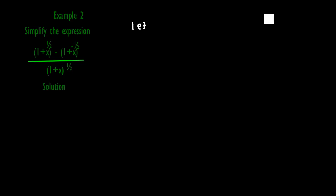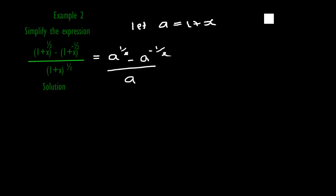To make it simpler, we let a equal 1 plus x. So 1 plus x appears as the first term in the numerator, the second term in the numerator, and also the term in the denominator. We will have a raised to power half for the first term, minus a raised to negative half for the second term, and a raised to power half in the denominator. Where we have 1 plus x, we put a, so it looks simpler and we can now utilize the laws of indices.